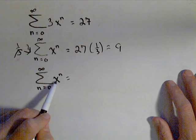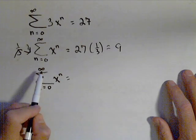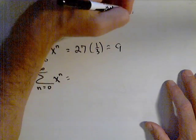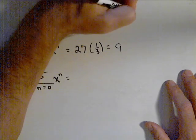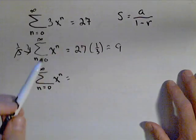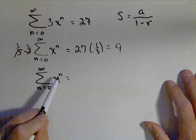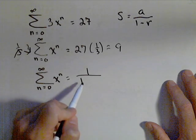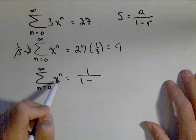This is a geometric series, and it's infinite, so that converges. Remember our formula for a geometric series: the sum is the first term over one minus the common ratio. Now, the first term is when I plug in zero, so I get 1. So this is equal to 1 over 1 minus the common ratio, which is just x.